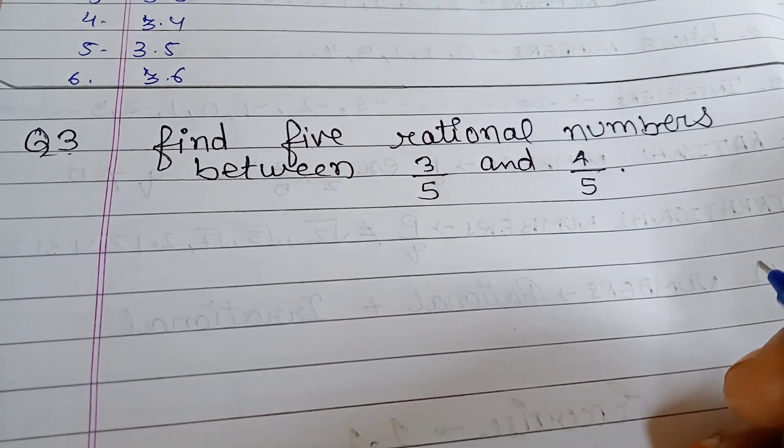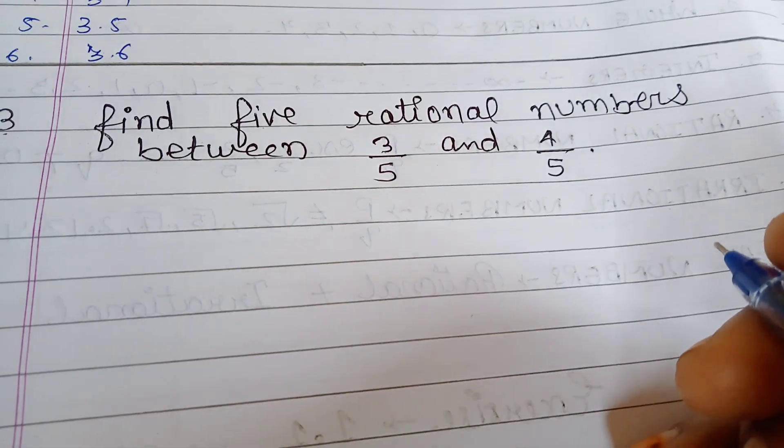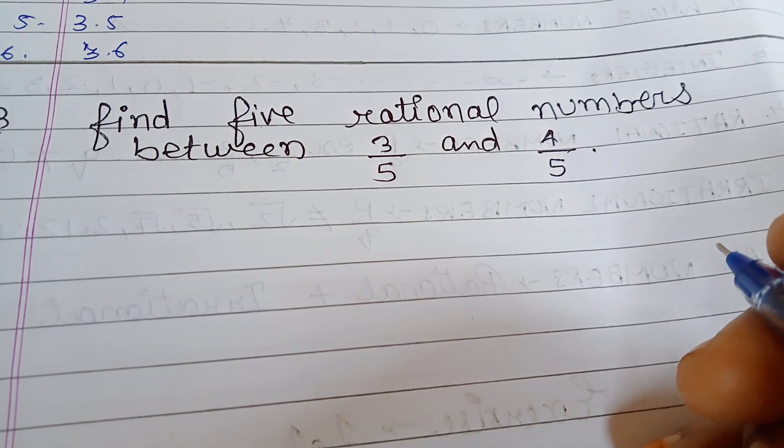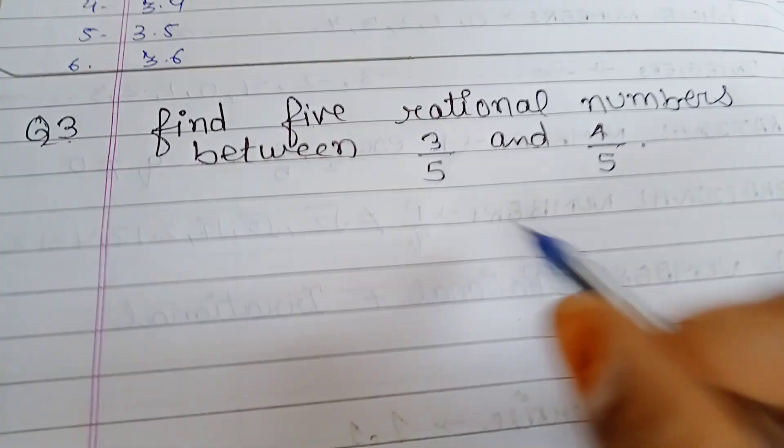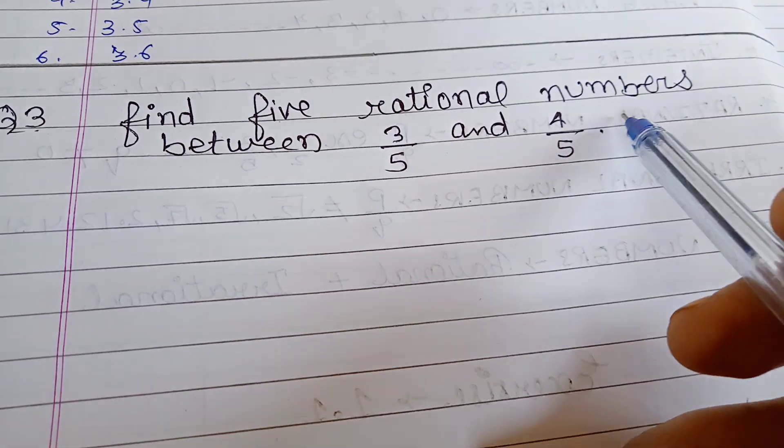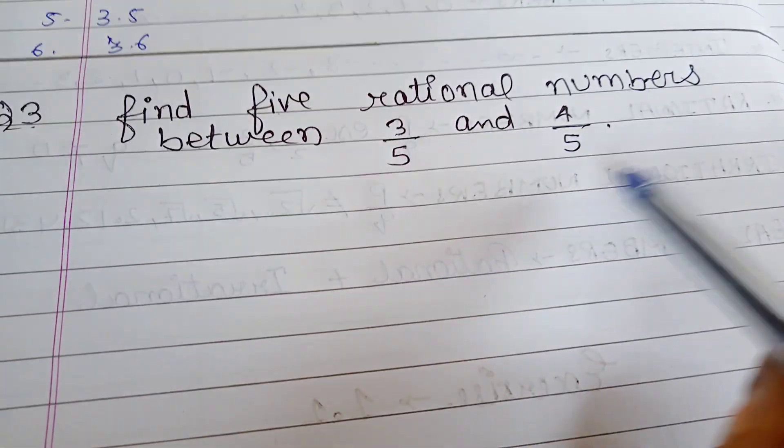Hello everyone, now we are going to start class 9th mathematics NCERT exercise 1.1 question number 3. Question number 3 is find 5 rational numbers between 3 by 5 and 4 by 5.